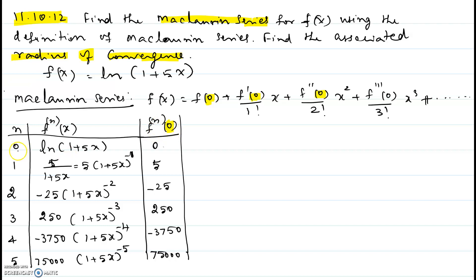When n equals 0, it is the function itself — ln of 1 plus 5x — evaluated at 0. Plugging in x equal to 0 gives ln of 1, which is 0. For the first derivative, n equals 1, we apply the chain rule: the outer derivative is 1 over 1 plus 5x, times the inner derivative, which is 5. Substituting x equal to 0 gives 5 over 1, so that is 5. We rewrite this as 5 times 1 plus 5x to the negative 1, so the remaining derivatives will flow smoothly.